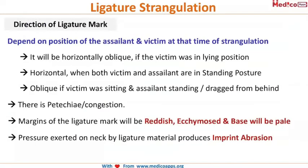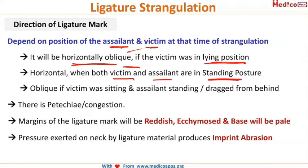The direction of the ligature mark depends on the position of the assailant and the victim at the time of the crime. It will be horizontally oblique if the victim was in a lying down position. It will be completely horizontal when both victim and assailant are in standing posture. It will be oblique if the victim was sitting and the assailant was standing, or if the victim was dragged from behind — as the assailant exerts an upward force on the neck.